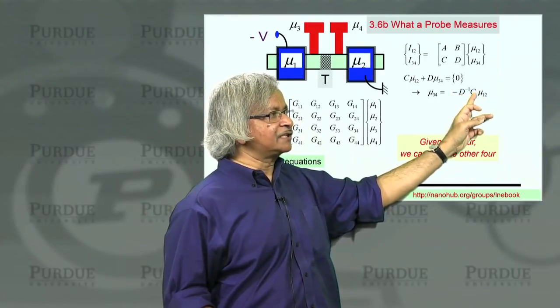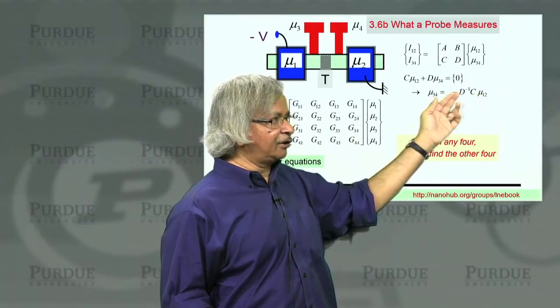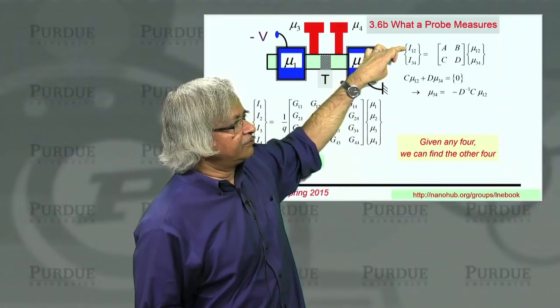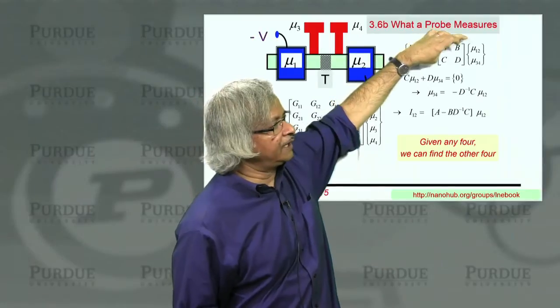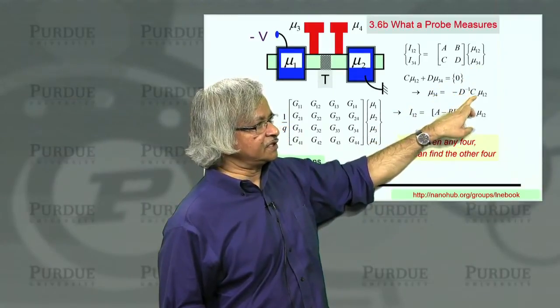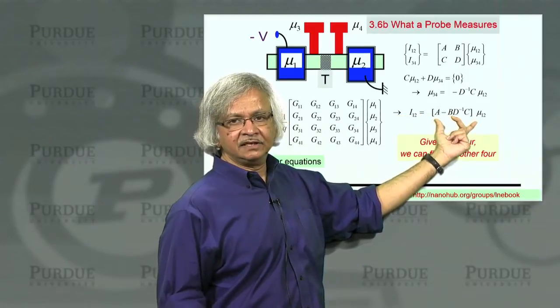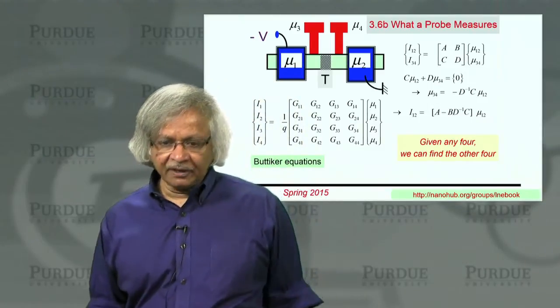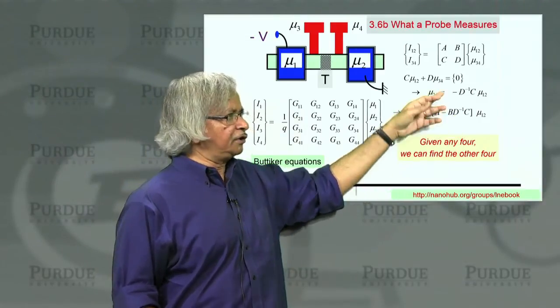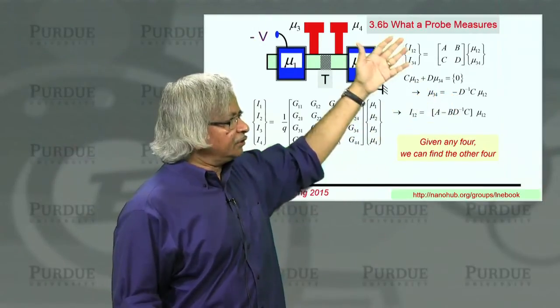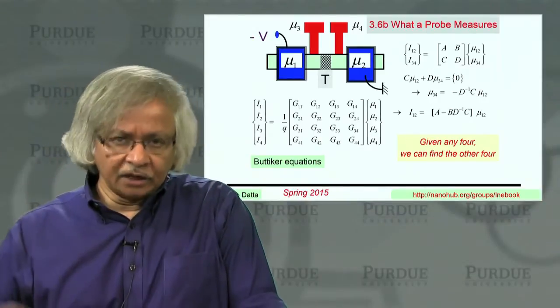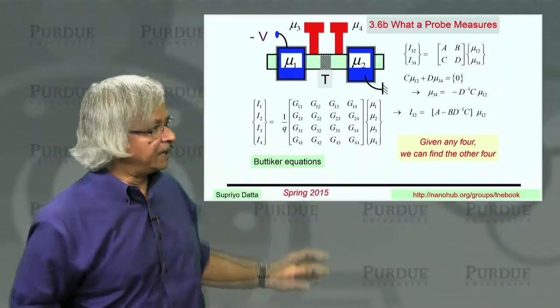Now, I can take that and put it back into the first equation. Because the first equation says I1,2 is equal to A times mu1,2. That's the first term. And then I have a B times mu3,4. But for mu3,4, I can put minus D inverse C. So finally, I1,2 is equal to A minus BD inverse C times mu1,2. So what that means is, if I gave you mu1 and mu2, you know how to calculate the current. You just find A minus BD inverse C. And if you want, you can calculate the mu3 and mu4 as well. So this is the procedure that is widely used. You see Boutiker's 1986 paper, that's very widely cited. Lots of calculations that have been based on just doing this and allows you to compare with experiment.